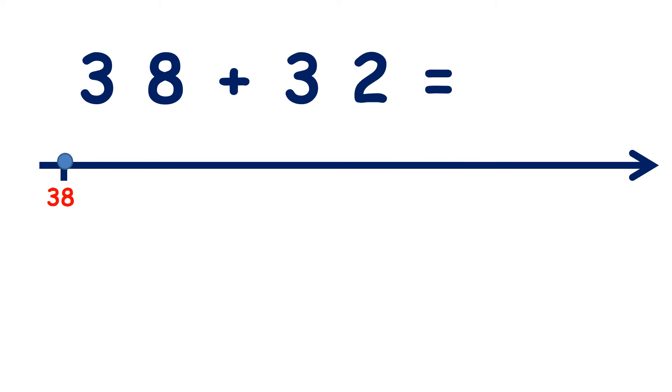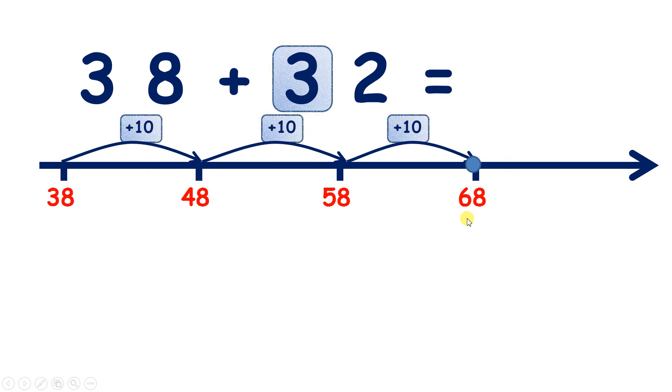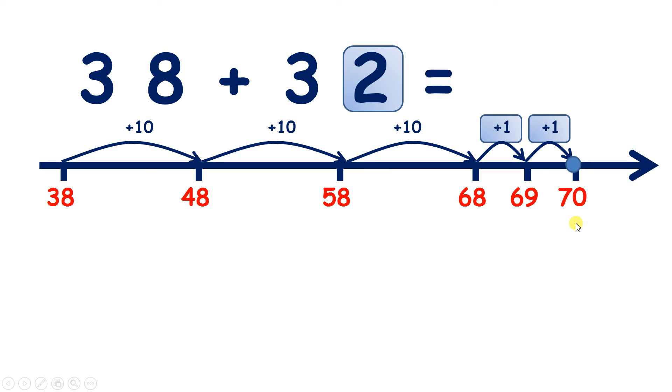Now we have 38 plus 32. So if I'm adding 32, how many 10s and units do I need to add? Well, I need to add three 10s, and then when I've done that, I can add two units. So let's add three 10s. From 38, I can count on in 10s: 48, 58, 68. So I've added three 10s. Now I need to add two units. So counting on two from 68, I get 69, 70. So I've added two units. So 38 plus 32 is 70.